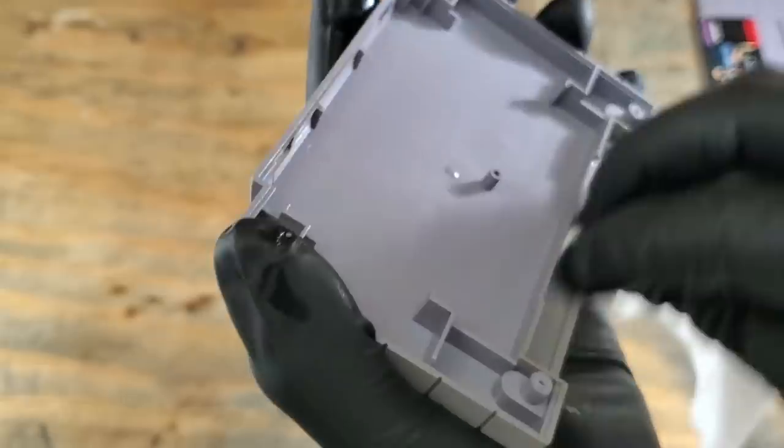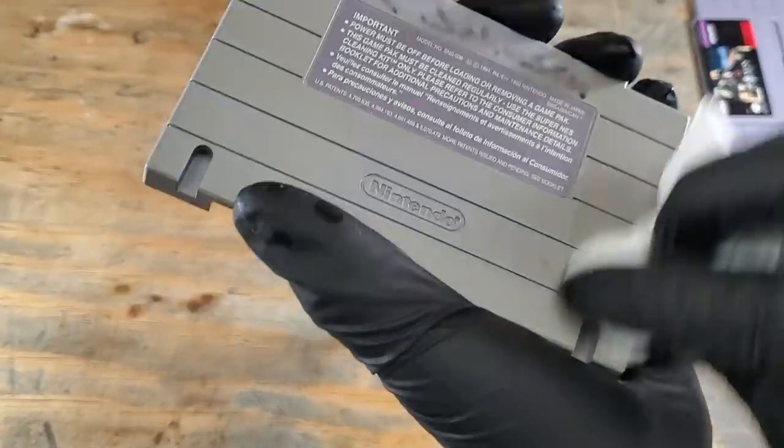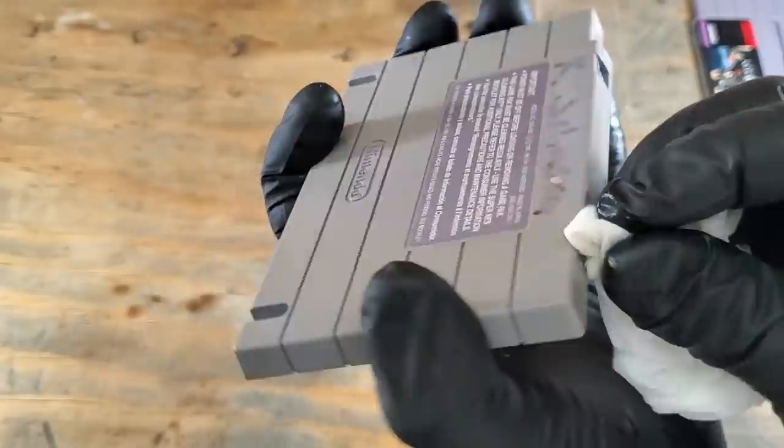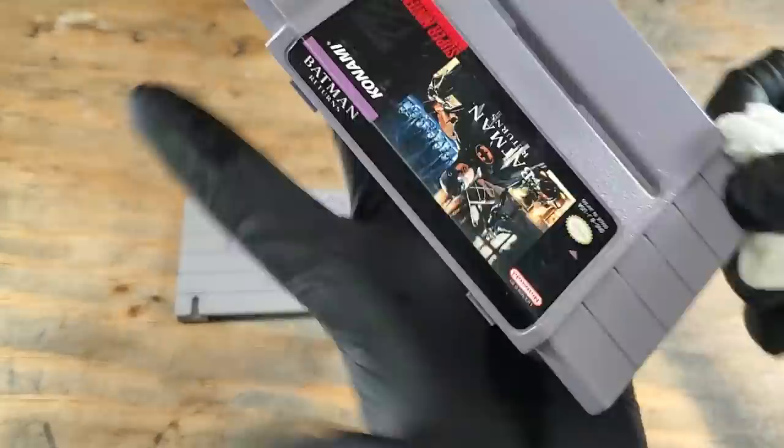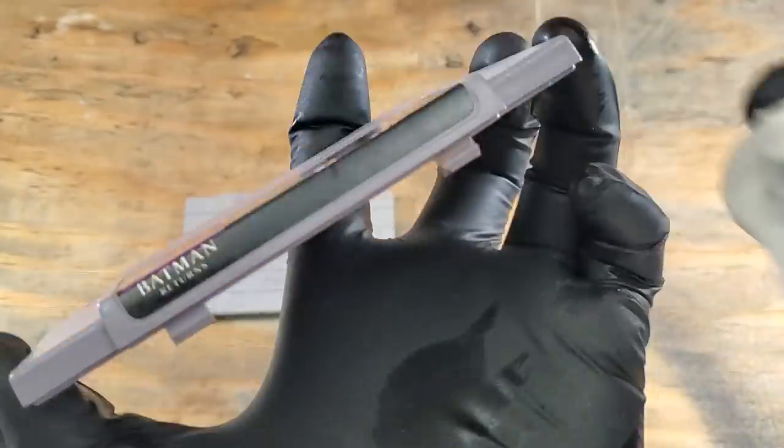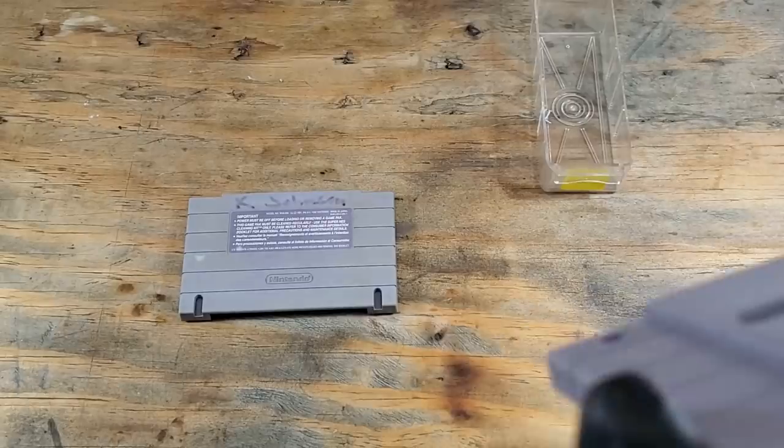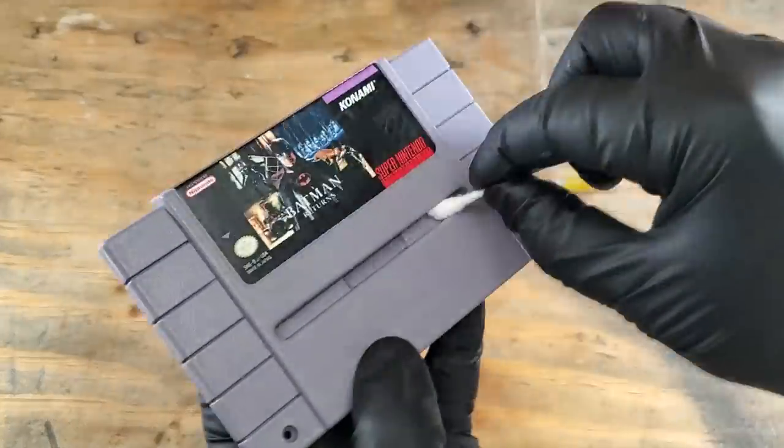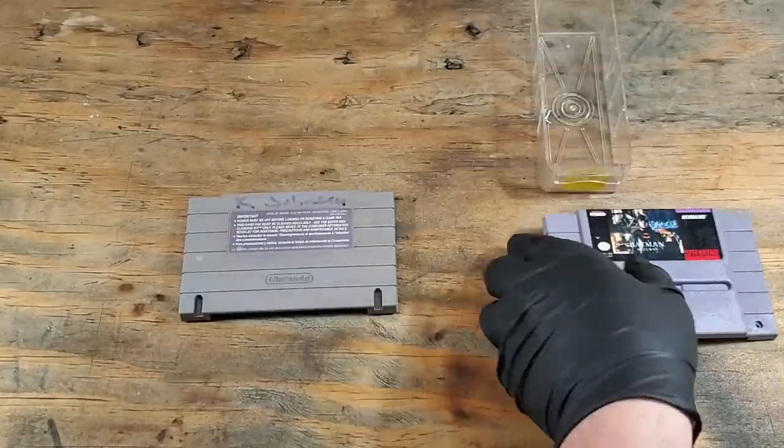And we'll get the rest of that cart too while we're at it. Let's be careful around those labels. We do not want to damage them if at all possible. Next, we'll use a cotton swab to get those hard to reach areas.